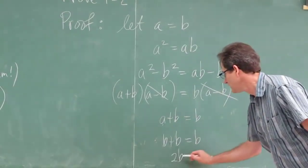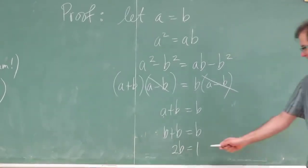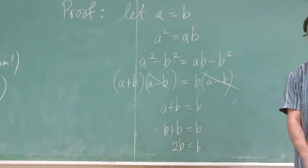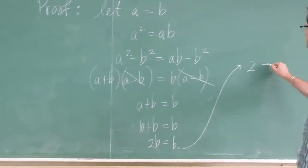Or 2b equals b. 2b or not 2b. This is not 2b. Here, this is just b. Divide both sides by b, and you get 2 equals 1.